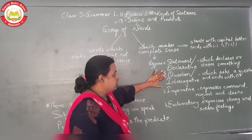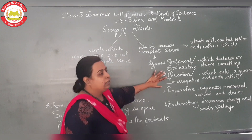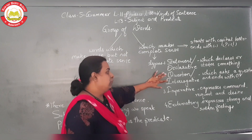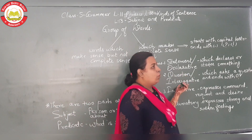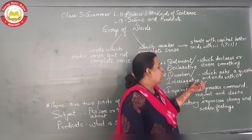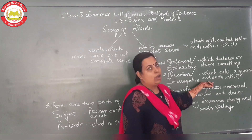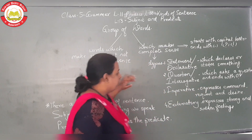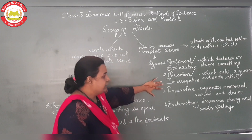The next type is a question, or in other words an interrogative sentence. A sentence or group of words which asks you a question and ends with a question mark is called an interrogative sentence. Now the third type is imperative sentences.